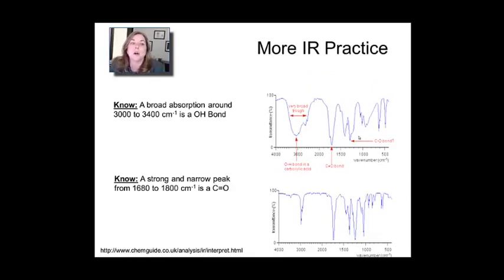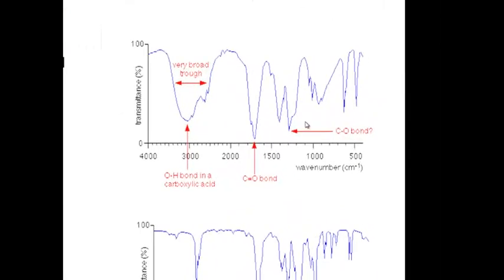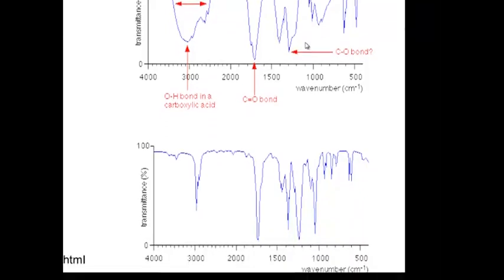Let's do a little bit more practice. You're going to have to know OH bonds and you're going to have to know carbonyls. The top one has a broad OH feature and it's fairly shifted to the red, so that means it's probably part of a carboxylic acid. And it's also got a C double bond O, which is also part of an organic acid. So you're pretty sure this is an organic acid.